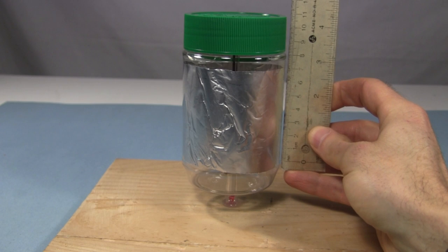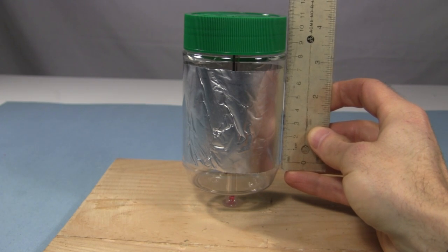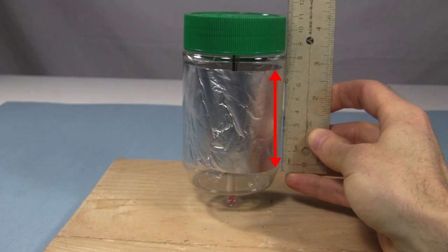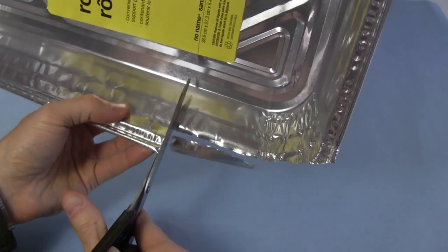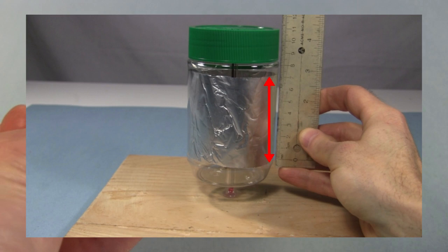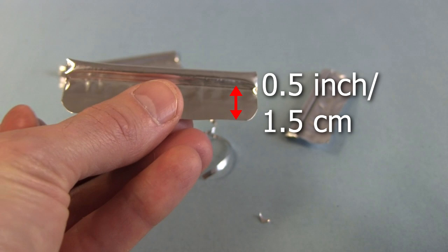I next measure the side of the jar that I want the electrodes to face, basically the height of the strip of foil I'd put inside. I cut pieces from the edges of the roasting pan. I want pieces that are as long as I measured on the jar and are around half an inch, or 1.5 centimeters wide.